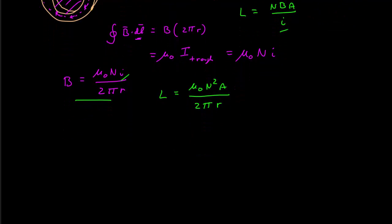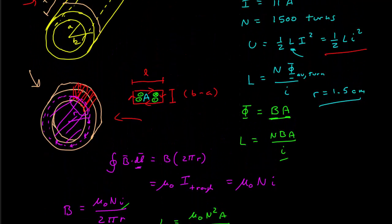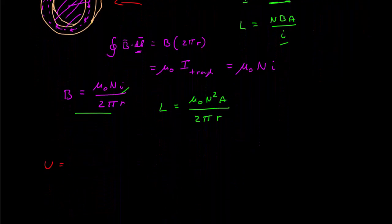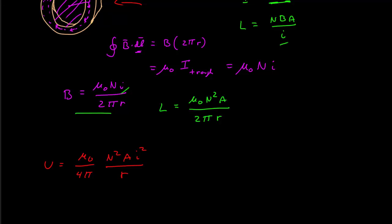Finally, if we want the energy, it is one half times L times i squared, which gives us μ₀ over 4π, times N squared times A times i squared, divided by r. I took the 2 from the one-half and combined it with the 2π to get 4π. Putting in all the known values, I get a final result of 0.726 joules.